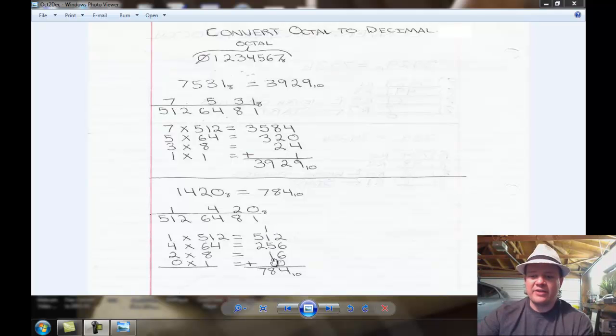So we have 0. We add 512, 256, 16 to get a sum of 784. 784 is the decimal equivalent to 1420 in octal. And that's it. And that's how you convert an octal number to decimal. Now let's go ahead and try to convert it back.